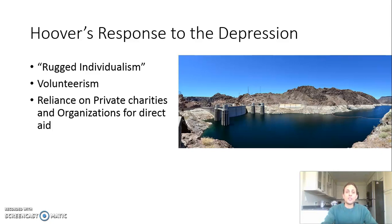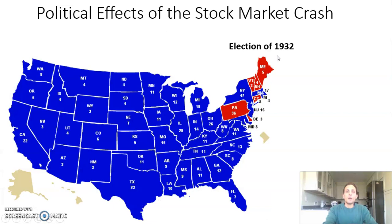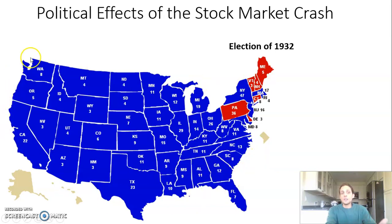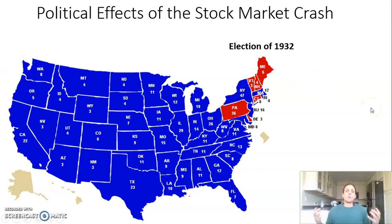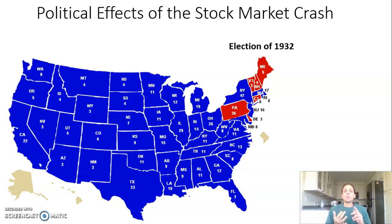You see wide-scale political effects of the stock market crash as well. In the election of 1932, Hoover in red and FDR in blue — Hoover's response to the Great Depression and his failure in the American people's eyes to solve its issues leads to a huge landslide political victory by FDR. FDR is going to come in with a totally different philosophy — much more government interventionist, much more direct aid, much more public works projects.